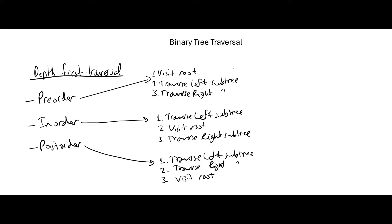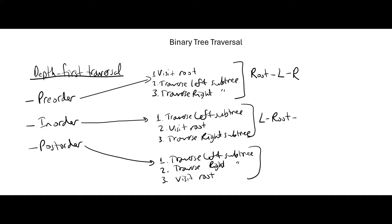We can summarize each algorithm in this way: for pre-order, visit the root, then left, then right. For in-order, left, then visiting the root, then right. And for post-order, traverse left, traverse right, and then visiting the root.